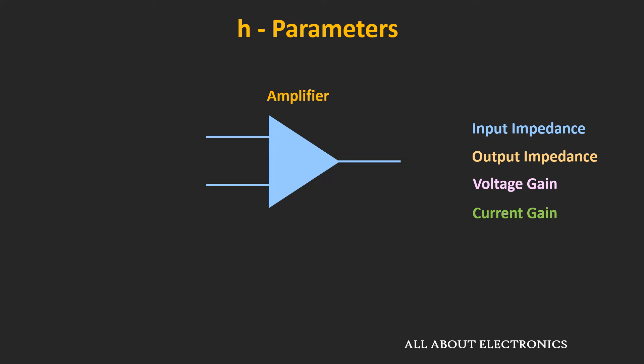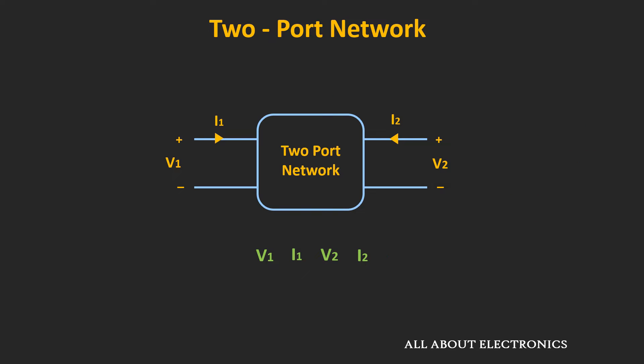Now let's see how the voltage and current of the two-port network can be expressed in terms of the H parameters. The two-port network has four variables — v1 and i1 on the port 1 side, while v2 and i2 on the port 2 side. Out of the four variables, two are the independent variables while the remaining two are the dependent variables.